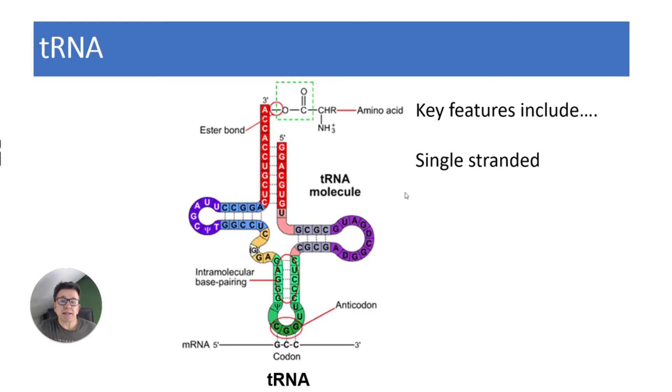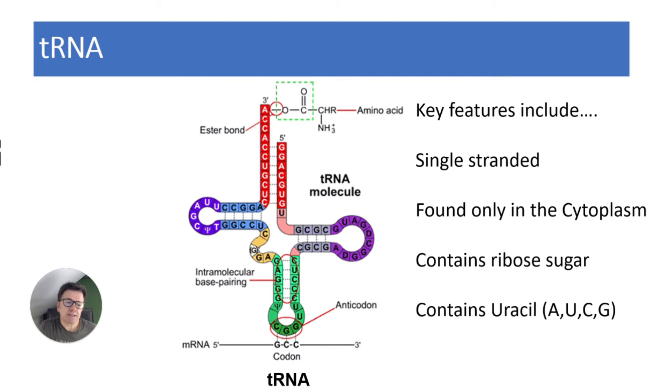Key features include: they are single-stranded, found only in the cytoplasm, contain ribose sugar, and contain uracil again—A, U, C, and G. But they contain hydrogen bonds because you can see it has this cloverleaf structure that joins together. On the bottom, you have this thing called an anticodon, which is a code complementary to the mRNA. The triplet code can then code for a particular amino acid.